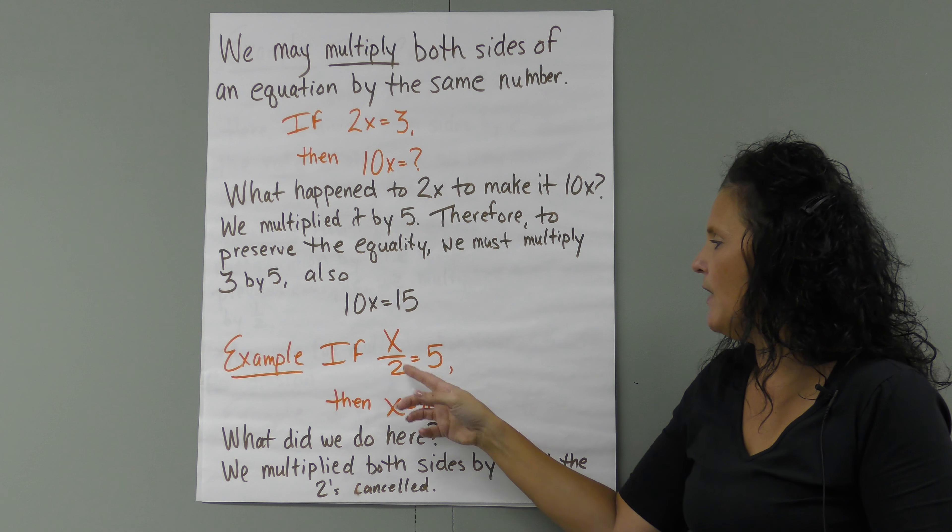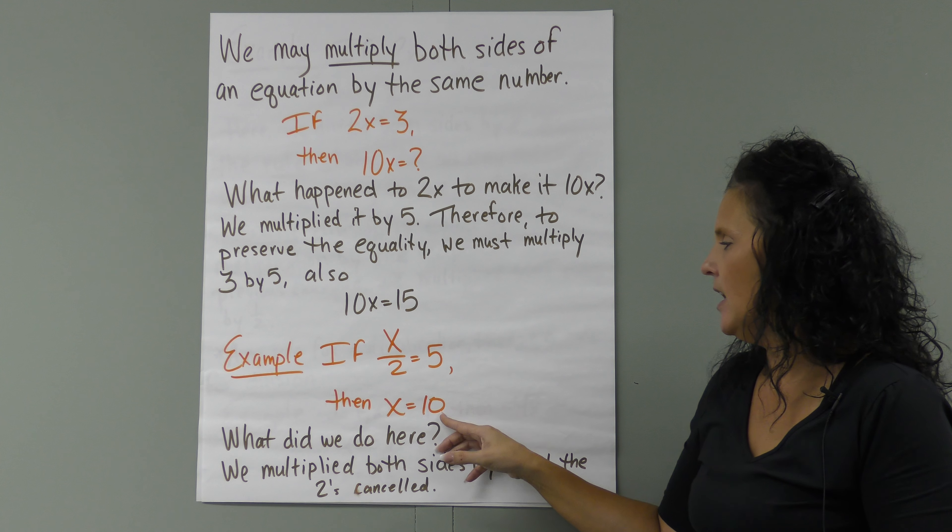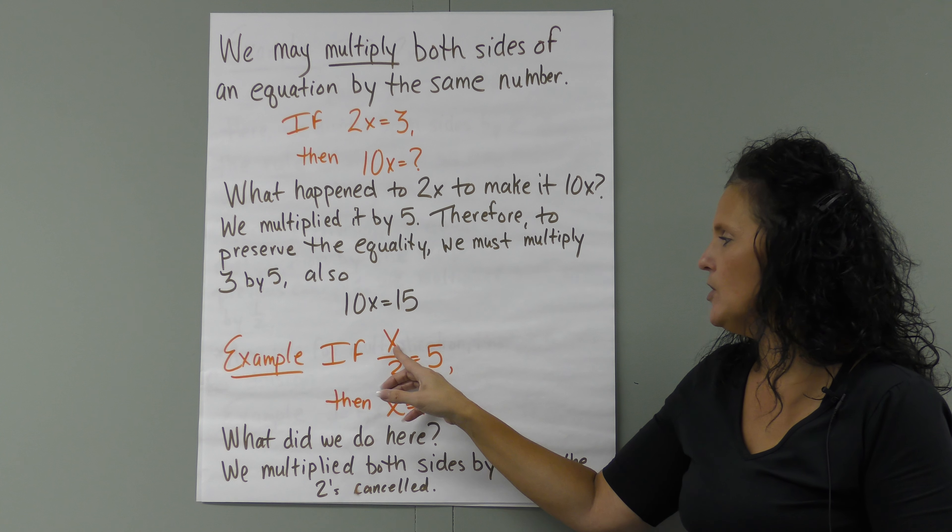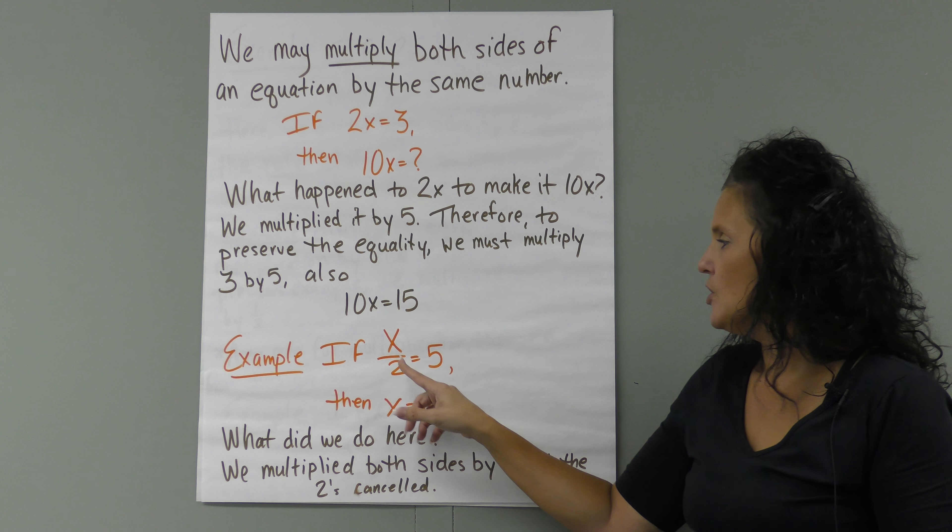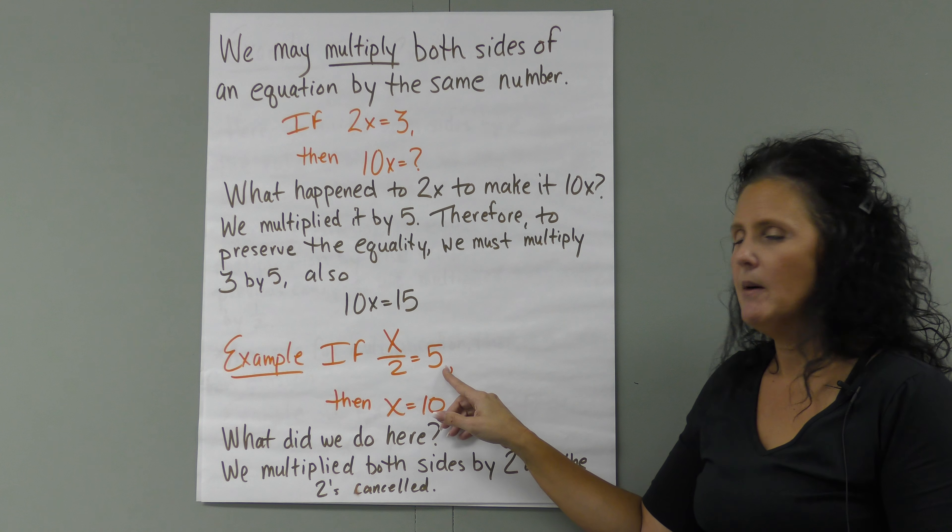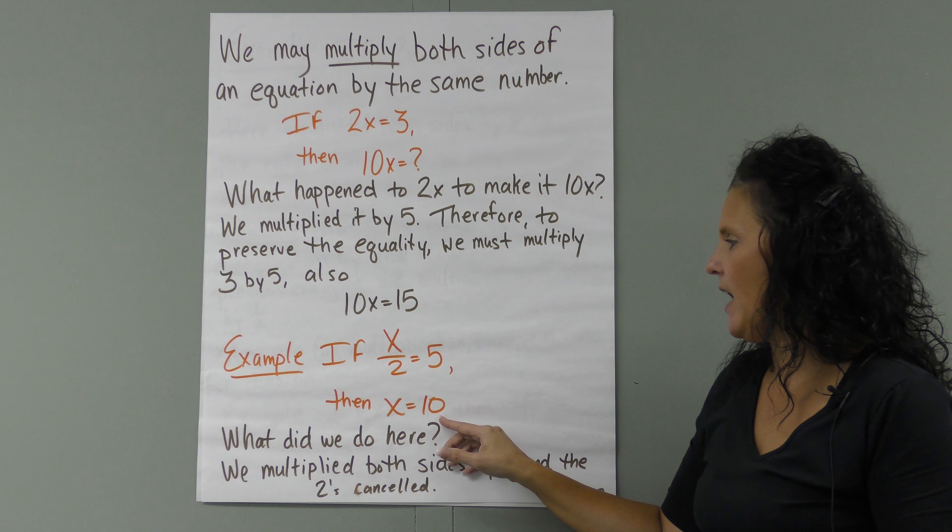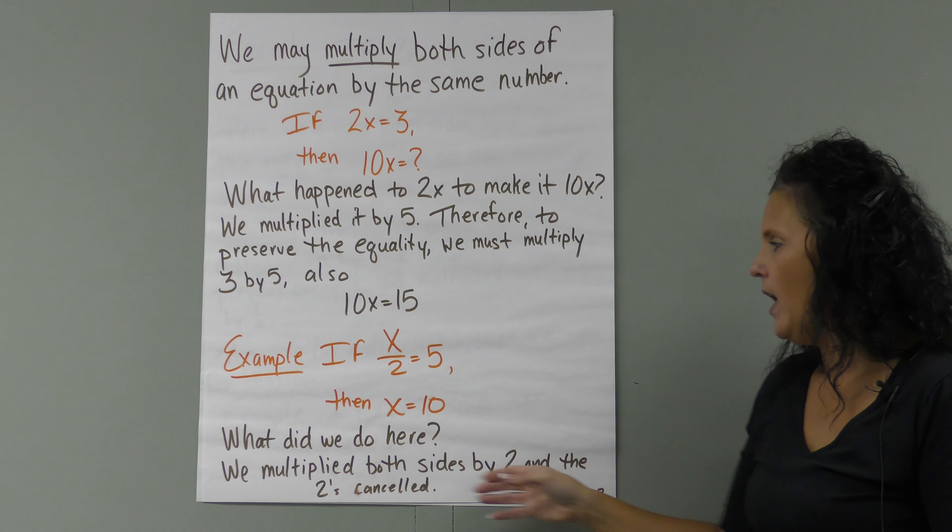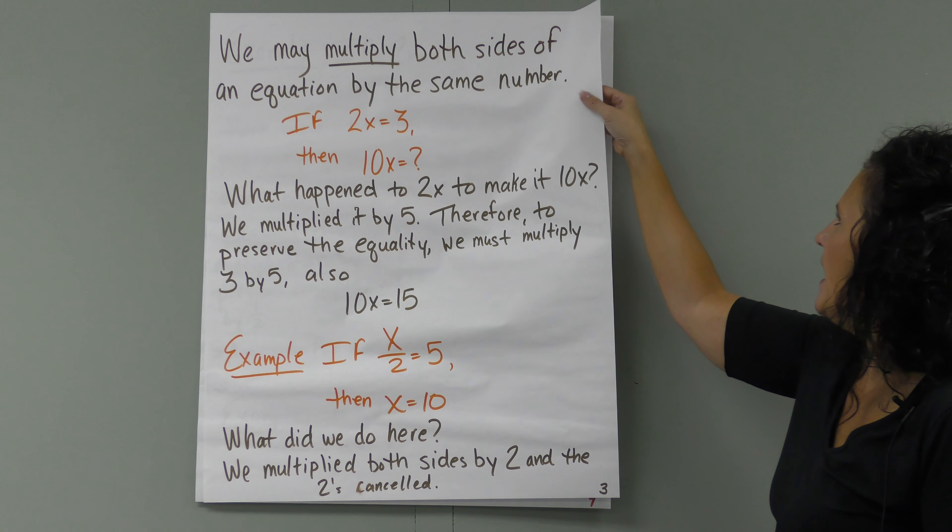If we have X divided by 2 equals 5, then how do we get X equals 10? We have a 2 here, and we would have to multiply—we've divided by 2, we'd have to multiply by 2 over 1, or 2, to get rid of this 2. If we multiply by 2 on this side to get rid of this 2, we have to multiply by 2 on this side. So we've brought X down because we've gotten rid of the 2, and 2 times 5 equals 10. We multiplied both sides by 2, and these 2's canceled on this side.